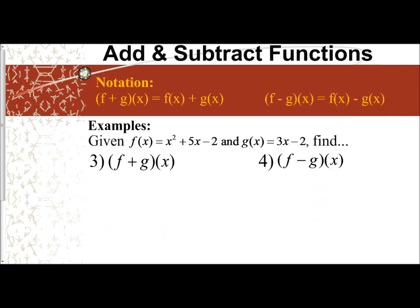f plus g of x. This time I'm told f of x is x squared plus 5x minus 2. So I put it in parentheses: x squared plus 5x minus 2. I'm adding g of x, which is 3x minus 2.